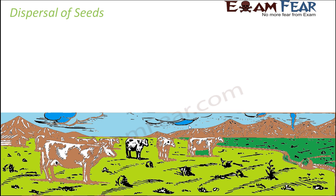Air also helps in dispersal of seeds. Seeds are the tiny things which give rise to new plants. Seeds are produced by plants, and then those same seeds can be used to give rise to new plants, helping plants reproduce from one generation to another.